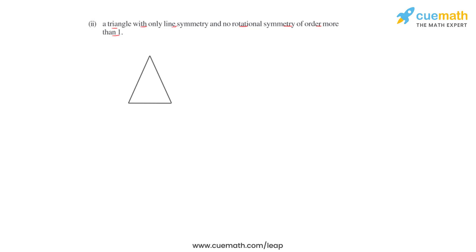The next part asks us to draw a triangle with only line symmetry and no rotational symmetry of order more than one. This is only possible in the case of an isosceles triangle. The line of symmetry divides the isosceles triangle into two equal halves. If the triangle is folded about this line, the two equal parts will coincide, making it the line of symmetry. So for this isosceles triangle, the number of lines of symmetry is only one.